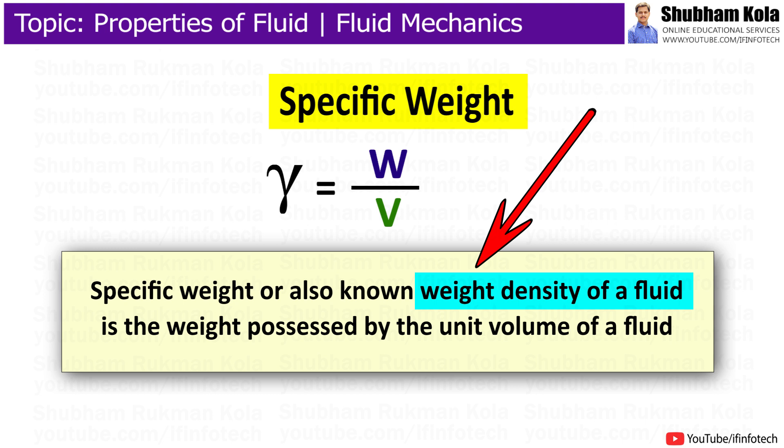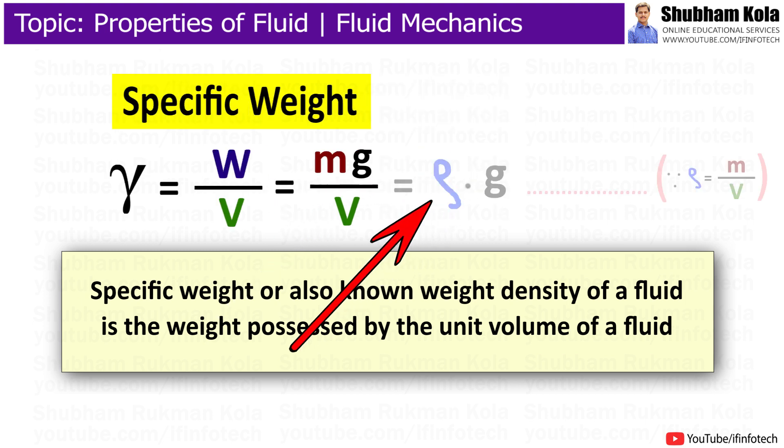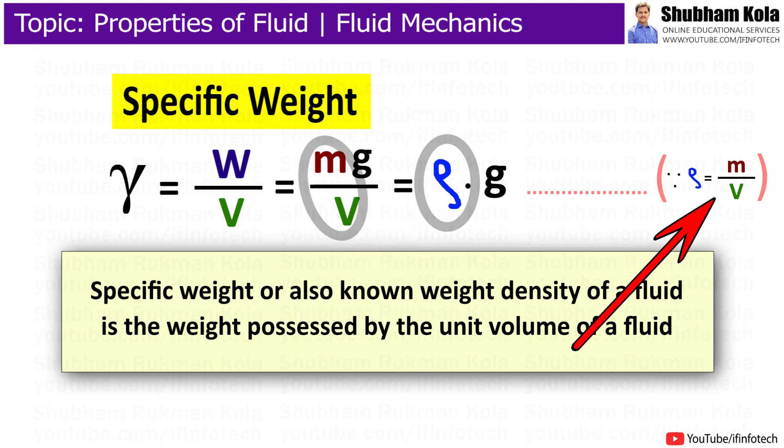Specific weight, also known as weight density of a fluid, is the weight possessed by the unit volume of a fluid. Specific weight is dependent on acceleration due to gravity, because weight of fluid is mass times acceleration due to gravity, and we have already discussed that density of fluid equals mass upon volume.